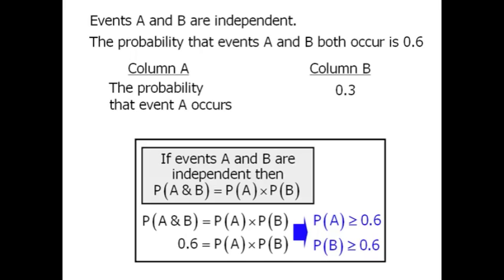Here's why. Let's consider the possibility that the probability of A occurring is 0.3. That would mean that the probability of B occurring would have to be equal to 2. And no probability can be greater than 1.